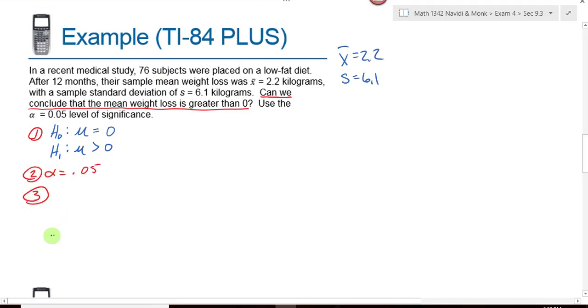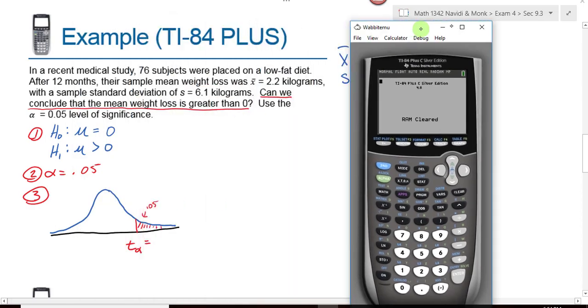Our alpha level is what? And then we sketch a graph. Because I don't know the population standard deviation, I'm going to use a t-distribution. But the t-distribution is symmetric and unimodal. So I draw a shape that looks an awful lot like a normal distribution. Will my alpha level be in the left tail, the right tail, or both tails? Right tail because my alternative is greater than. So this area right here is .05.